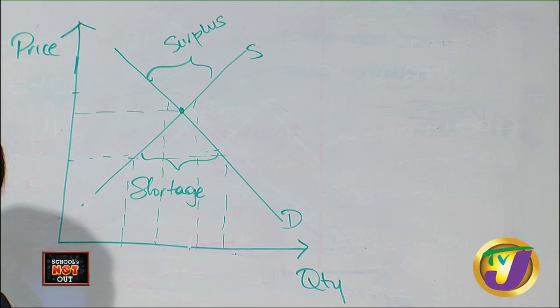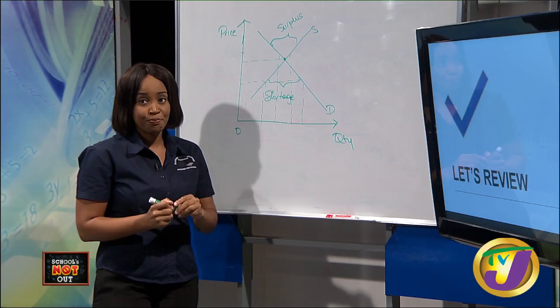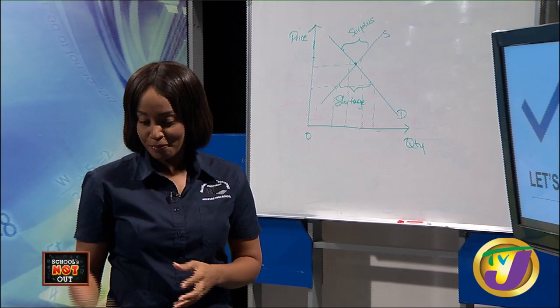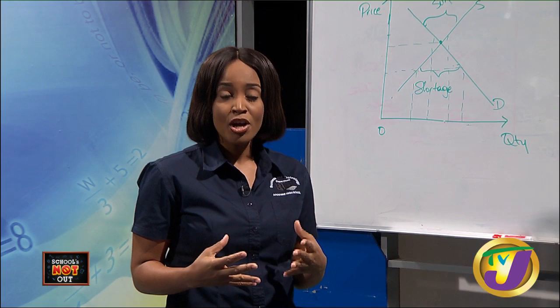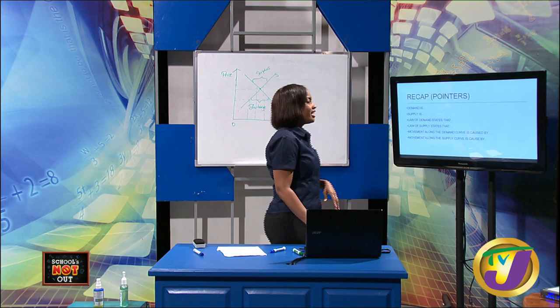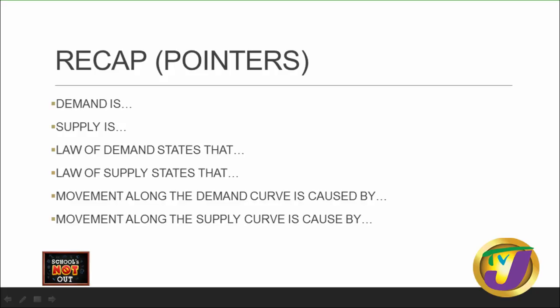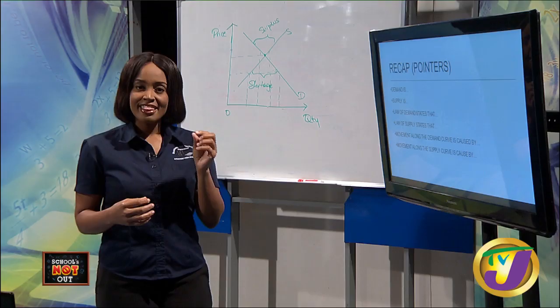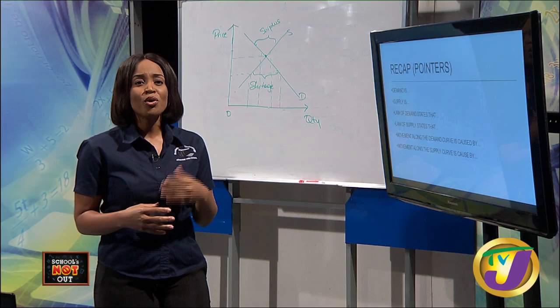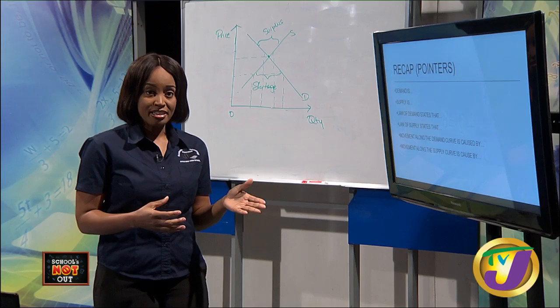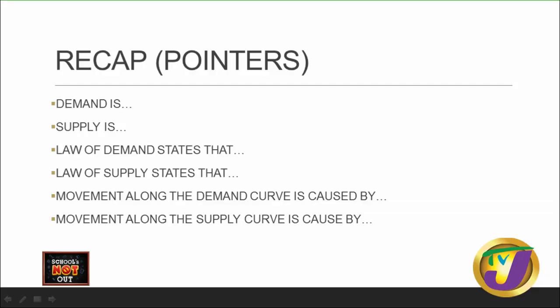Let us recap. Demand refers to the willingness and ability of a consumer to purchase a good at a particular price point — this is effective demand. Desired demand is when you are willing to purchase something but the good may not be available or you cannot afford it. Typically, we refer to effective demand when covering most topics in economics.